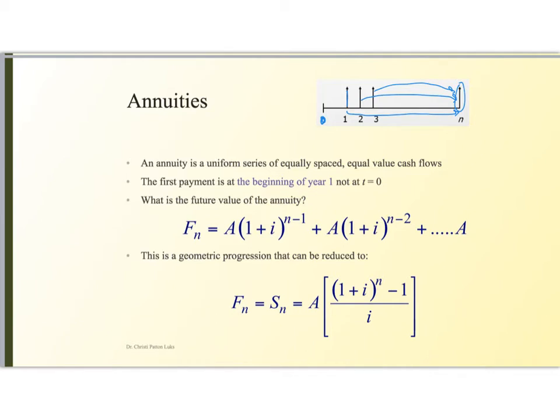Now this turns out to be a geometric progression. And if you remember your math rules for all of these various infinite series or this isn't an infinite series just a series. This can actually be reduced algebraically so that we find that the future value of this is A times one plus that periodic interest rate to the nth power minus one over that periodic interest rate. Now if this is monthly this interest rate needs to be based on a month.